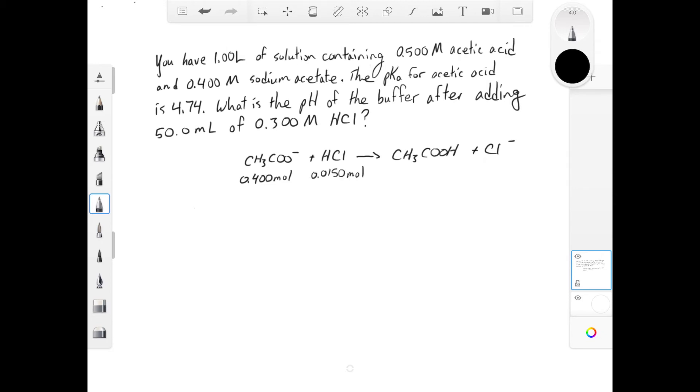And of course, initially we have 0.5 molar acetic acid in one liter, which means 0.5 moles of acetic acid. And initially, before any reaction happens, we have no chloride ion.